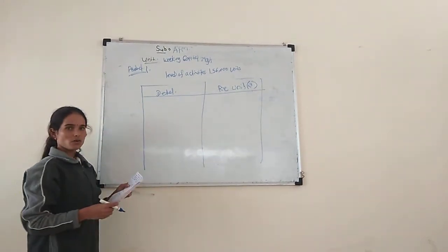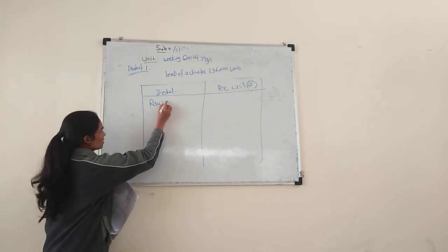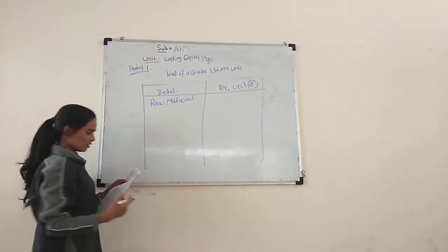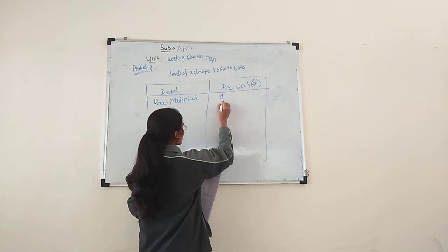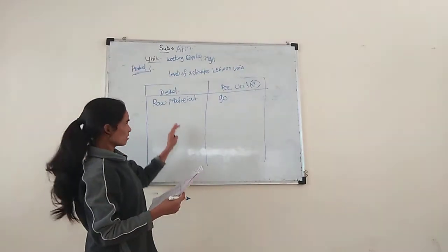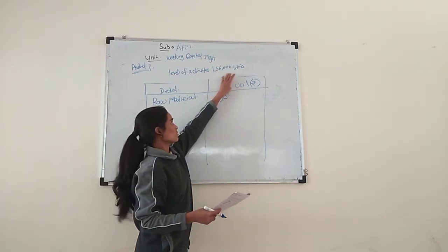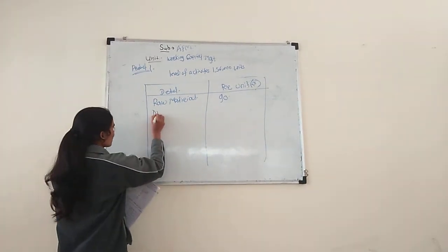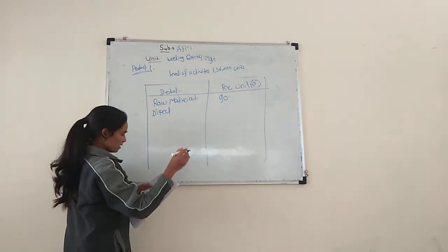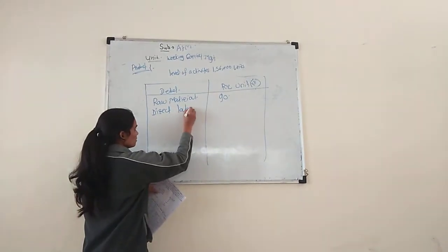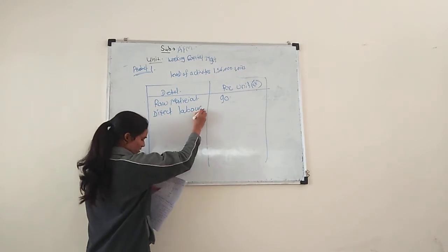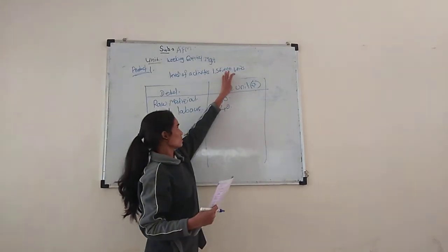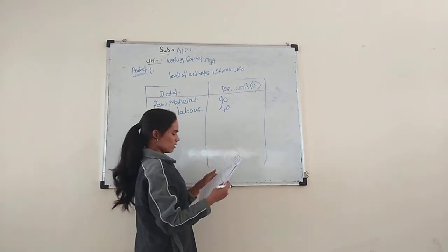The first item is raw material: 90 per unit, so 90 into 156,000 units of production. Next one is direct labour: 40 per unit, so 40 into 156,000 units of production, divided by 12.